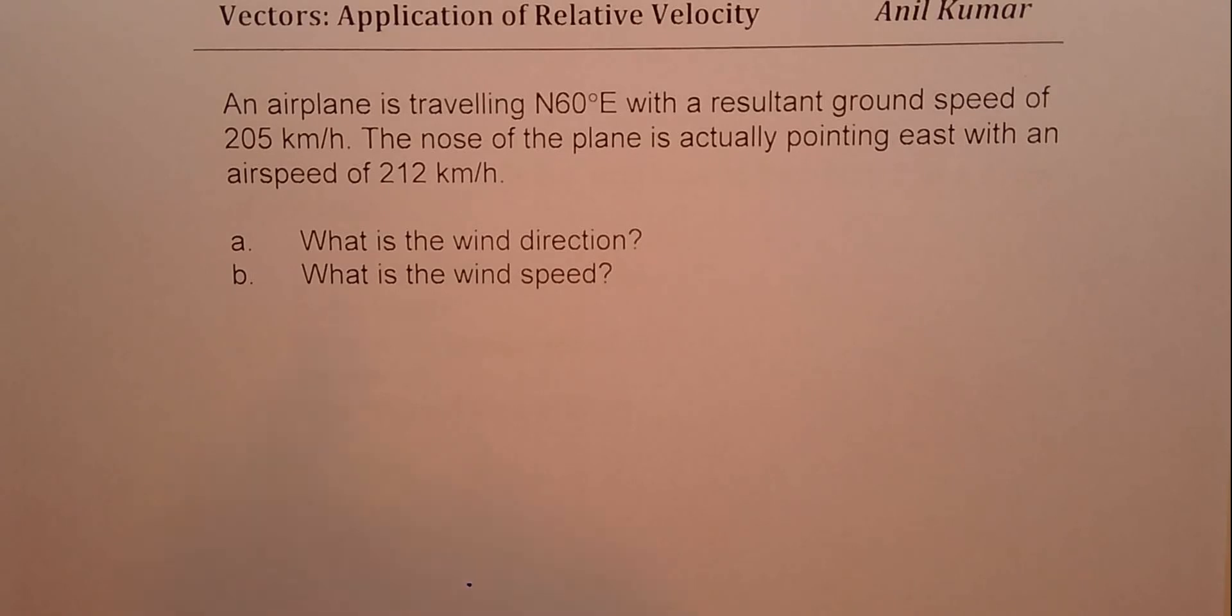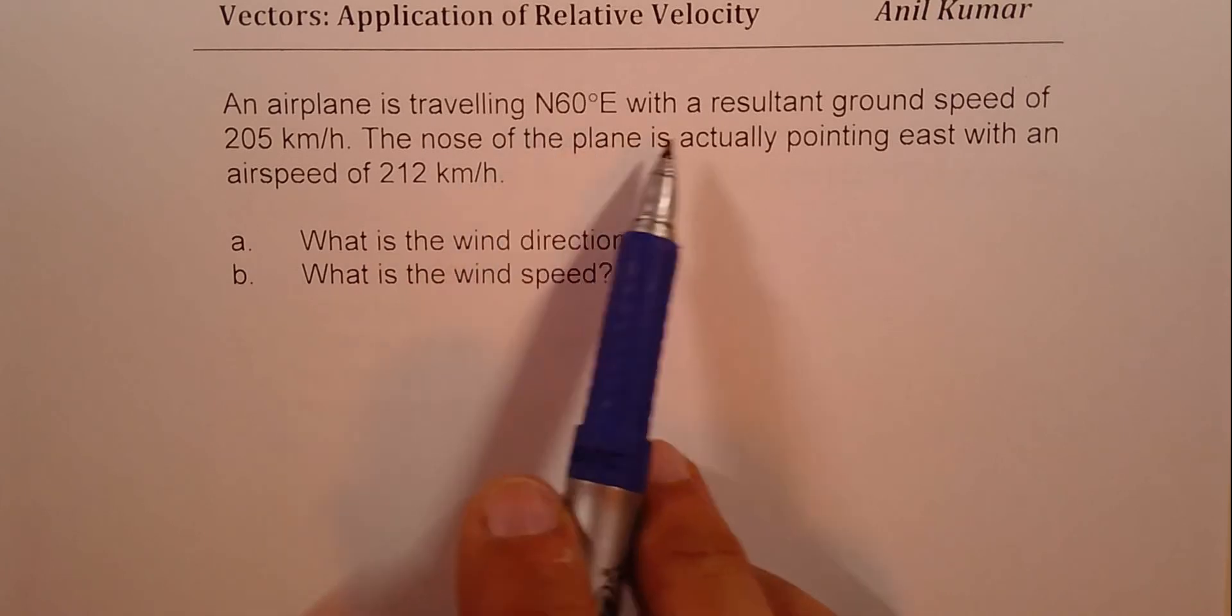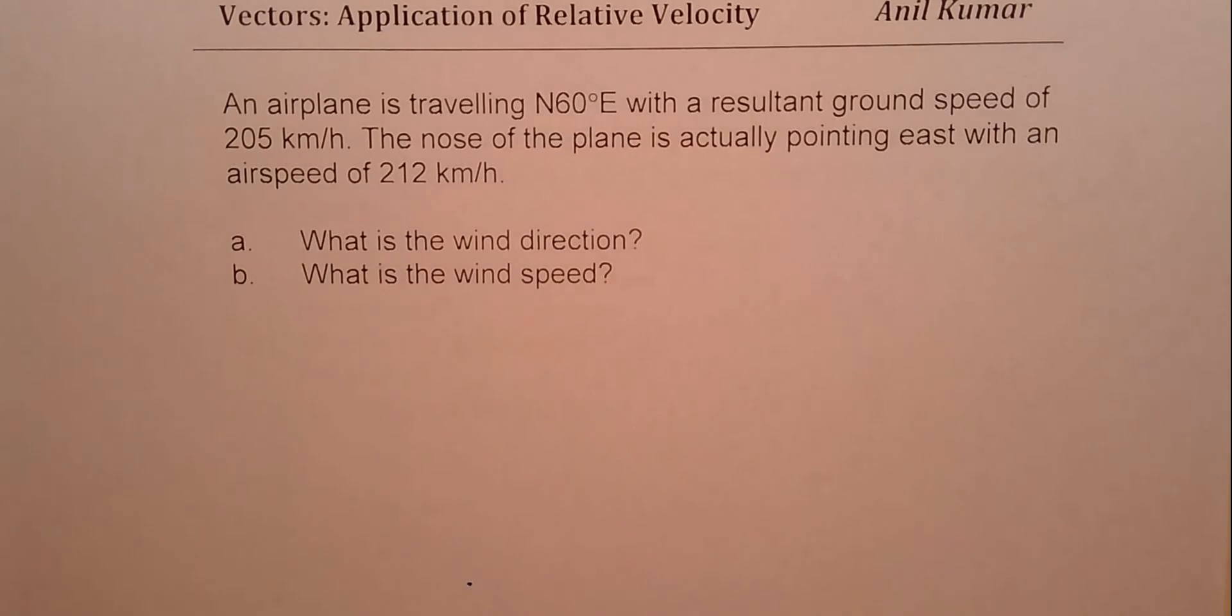An airplane is traveling 60 degrees east of north with a resultant ground speed of 205 kilometers per hour. The nose of the plane is actually pointing east with an airspeed of 212 kilometers per hour. What is the wind direction? What is the wind speed?